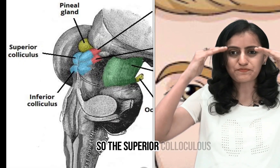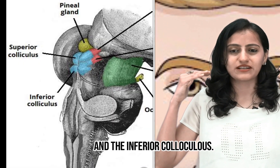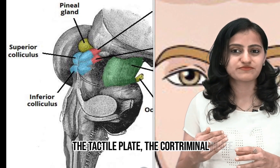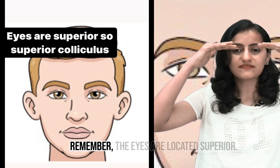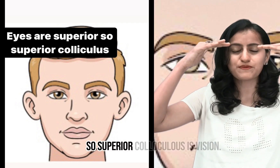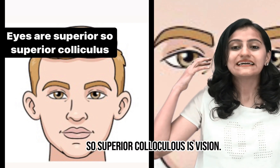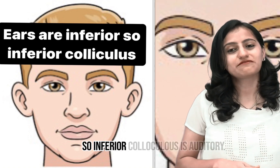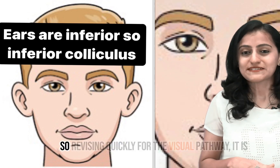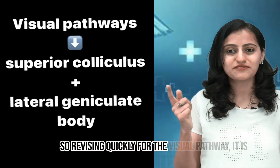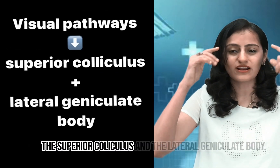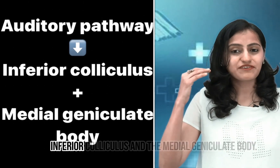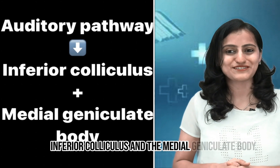Coming to the colliculi — the superior colliculus and the inferior colliculus — these are the parts of the midbrain, the tectal plate, the quadrigeminal plate. Superior colliculus: remember the eyes are located superior, so superior colliculus is vision. Inferior colliculus: the ears are located inferior, so inferior colliculus is auditory. So to revise quickly: for the visual pathway it is the superior colliculus and the lateral geniculate body; for the auditory pathway it is the inferior colliculus and the medial geniculate body.